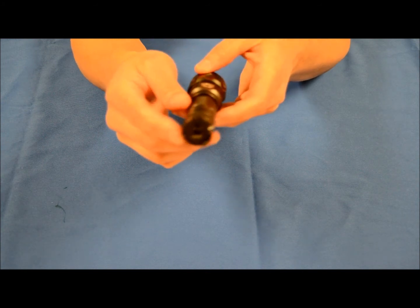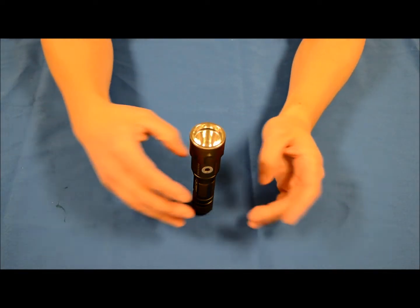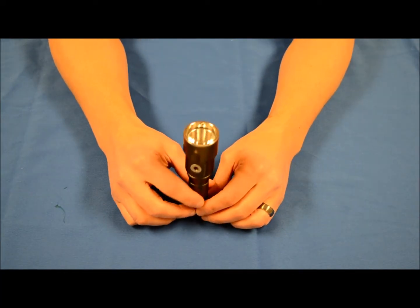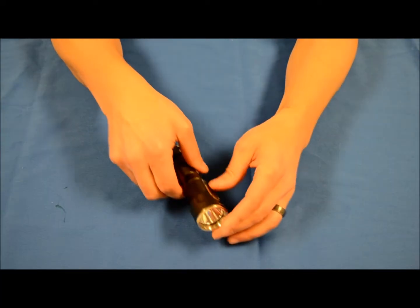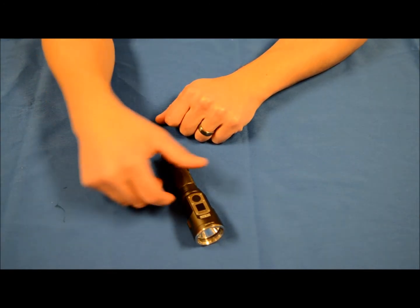It will stand on its tail cap, but because the tail cap is rounded off at each corner, it's not the most stable tail cap stander but it'll do in a pinch. Because the design of the head, it doesn't like to roll which is good. So if you set the light down on an even surface, it's not going to roll away from you.